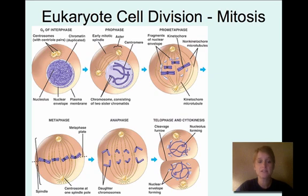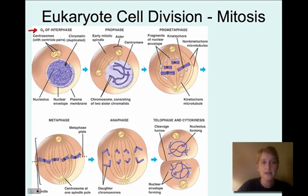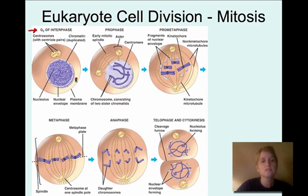Now let's look at mitosis in more detail. This diagram starts with G2 because it is the phase right before mitosis. You can see the nucleus with all the chromosomes — called chromatin at this point. It's duplicated, but it's all mixed up without much order. As we move into mitosis, you're going to see some dramatic changes.